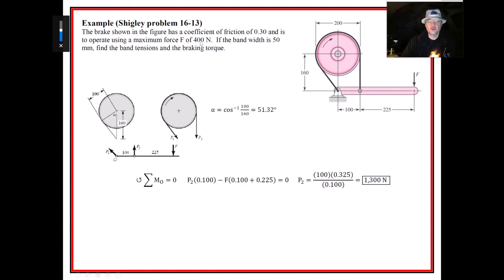From that we can find that P2 is going to be 1300 Newtons compared to this 400 Newtons that was applied. A lot of times nobody sees these notes when I write them out. I think there's a typo—that should be 400, right? 400 times 0.325 divided by 0.1 gives 1300.